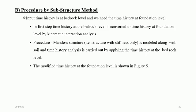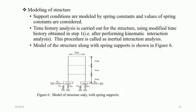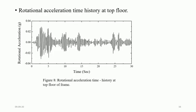In the substructure method, the time history at bedrock level is converted to the time history at foundation level by kinematic interaction analysis. Then the structure is modeled along with the soil, and time history analysis is carried out by applying the time history at the bedrock level. Support conditions are modeled by spring constants. Time history analysis is then carried out for the structure using the modified time history obtained in step 1 — this procedure is called inertial interaction analysis. Results from ABAQUS software show the relative acceleration time history and rotational acceleration time history at the top floor using spring supports. Thank you.